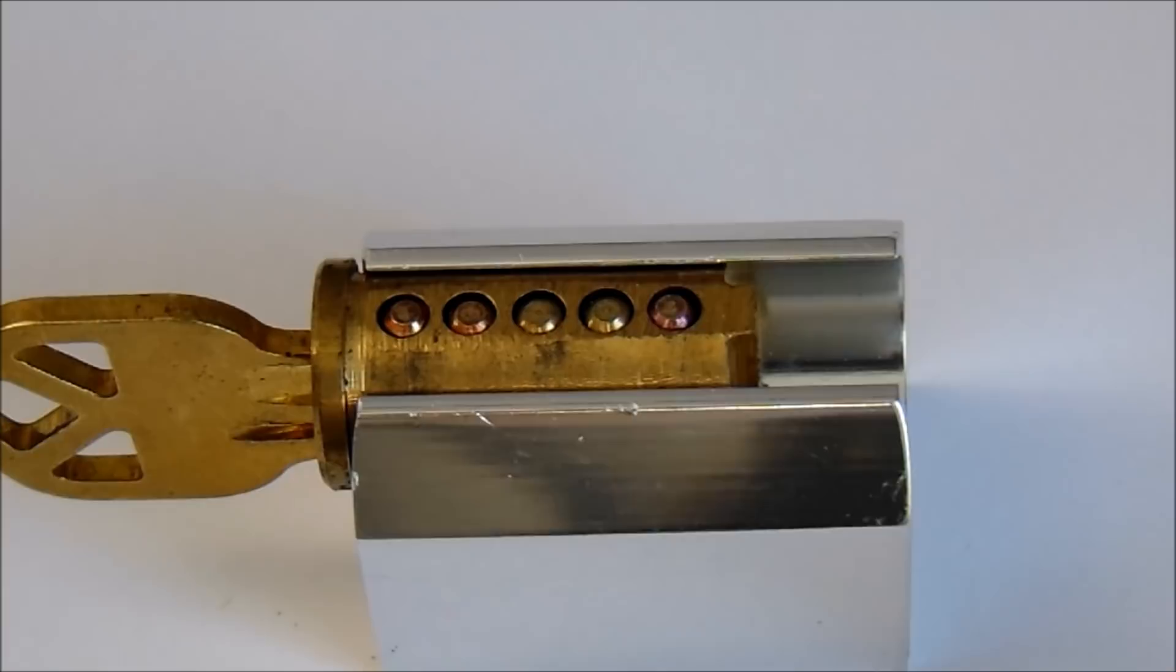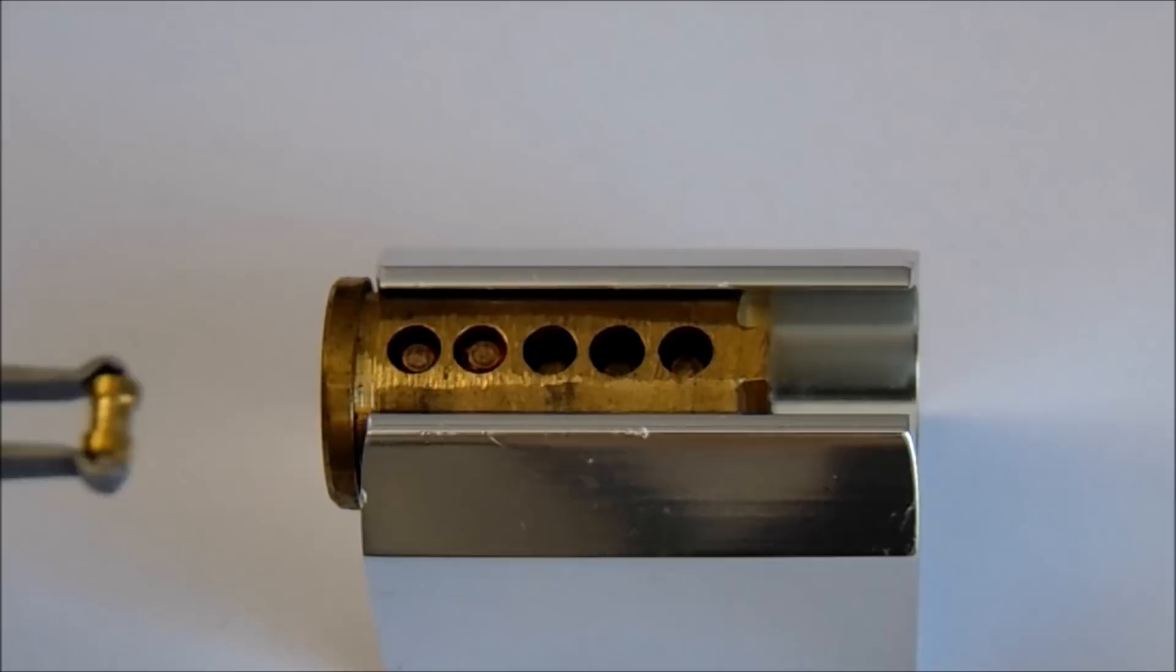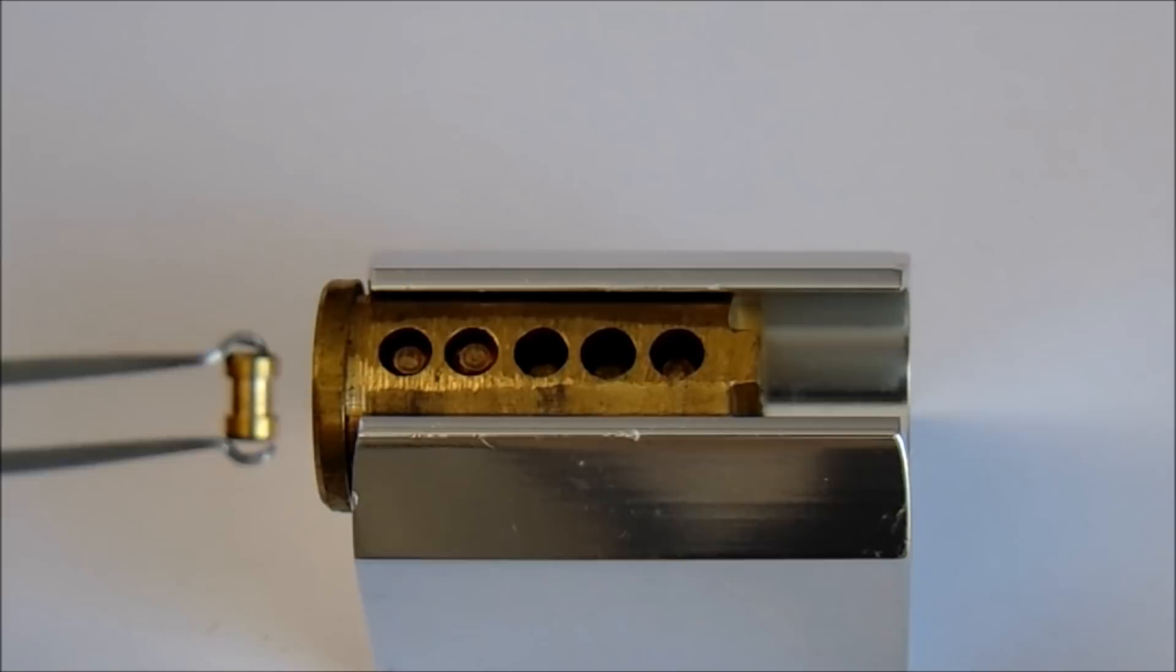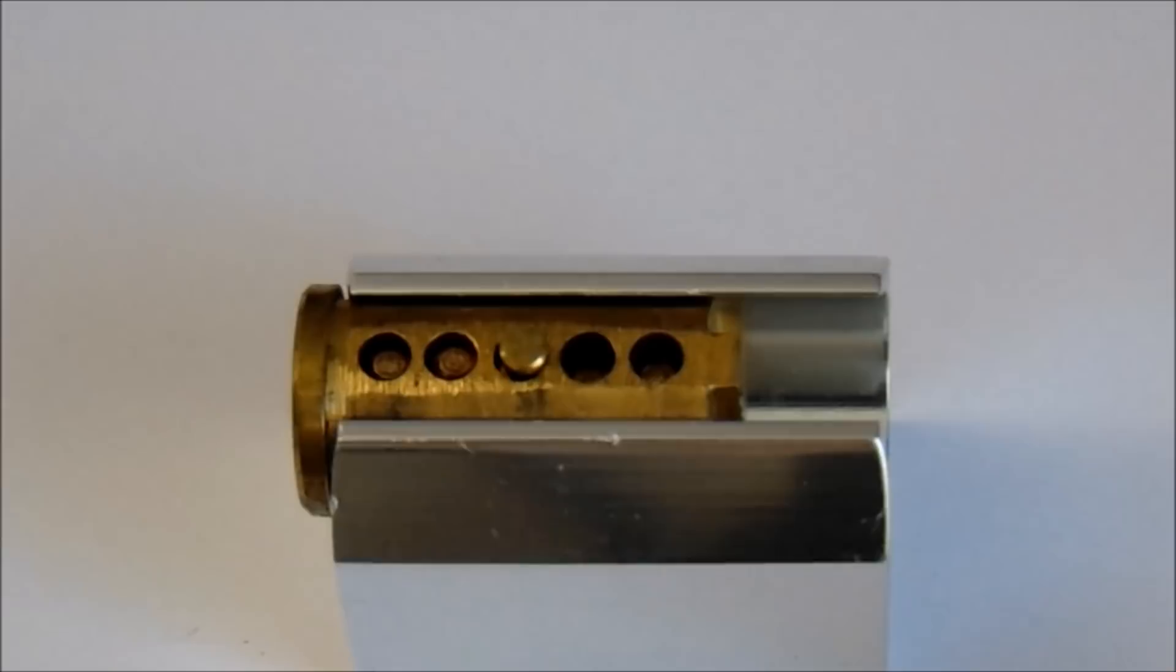But when you take into account a security pin, they all take advantage of the fact that you need to apply some tension to the plug in order to get the pins to bind and set. But since a spool pin has a thinner inside diameter and a thicker outside diameter, they very easily get stuck on the inside of the plug here and they can be very difficult to set.